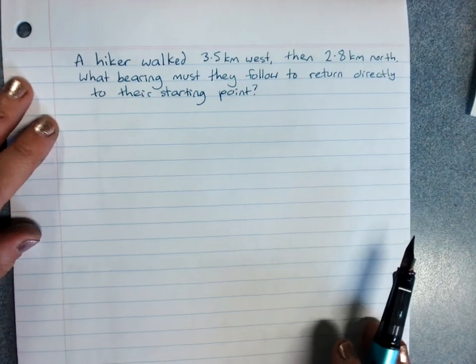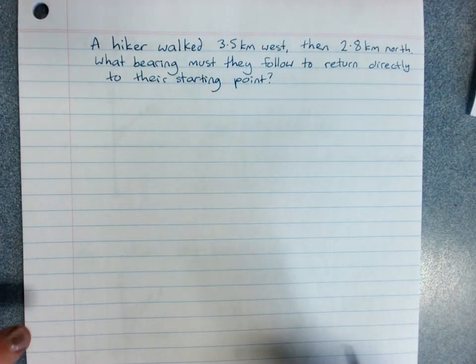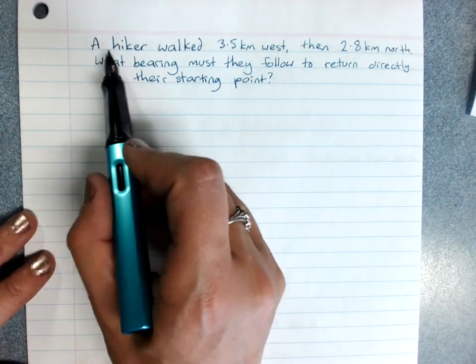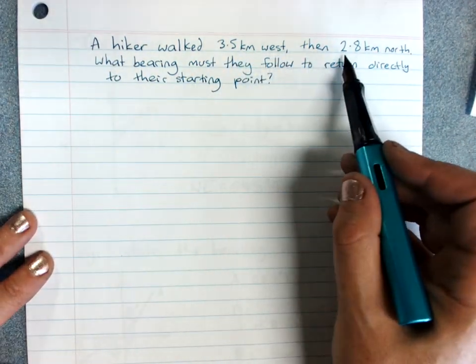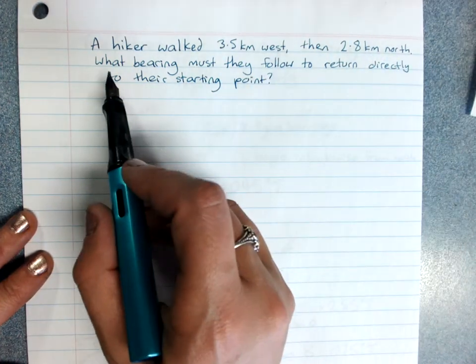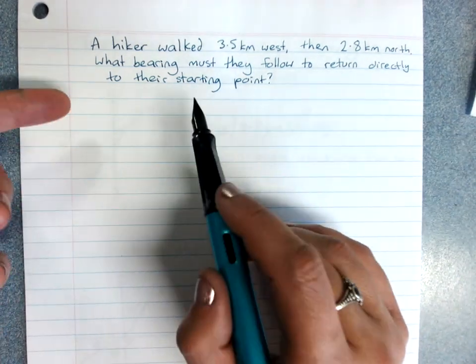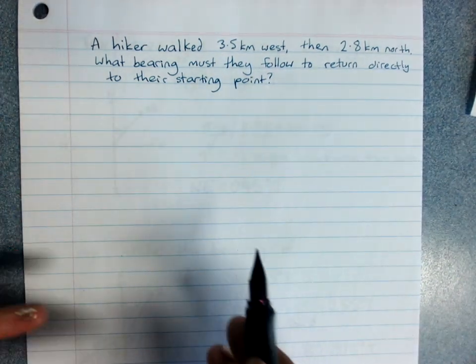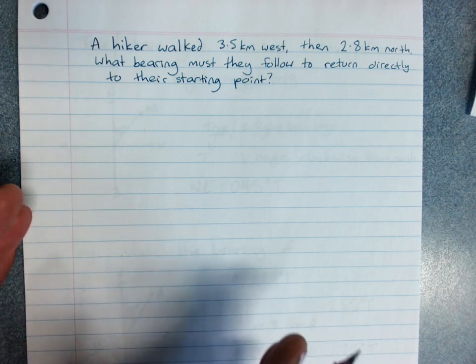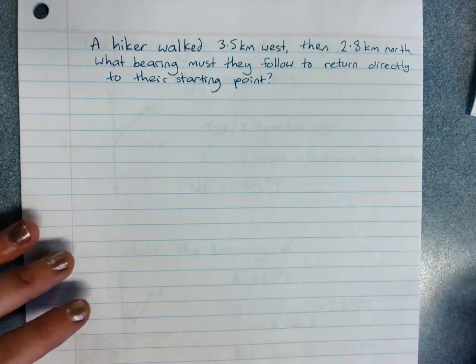Now the types of questions we might get do vary a lot, and they do start getting more and more complicated. Here's one. A hiker walked 3.5 kilometers west, then 2.8 kilometers north. What bearing must they follow to return directly to their starting point? So sometimes they'll ask for bearings, sometimes they'll give you a bearing and ask for distance. And as long as you're using right-angled trig and Pythagoras for distances as well, you're pretty much okay.